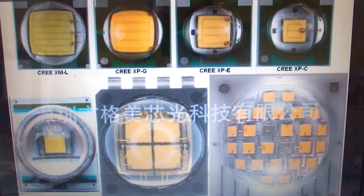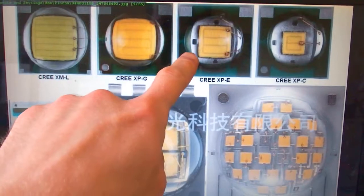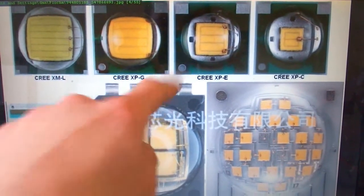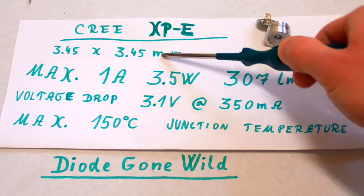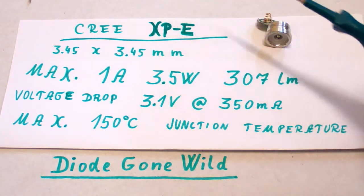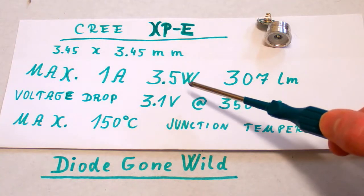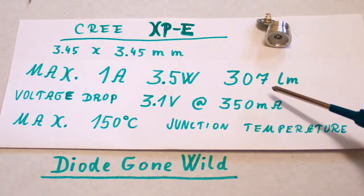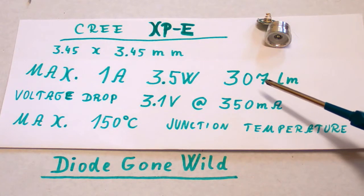And I was trying to identify the LED in it and it appears to me like Cree XPE LED type. And the appearance of the LED is the same, the size is the same, so it should be this one. And its maximum current is one amp and the maximum power is 3.5 watts. And the light output is 307 lumens at this power.